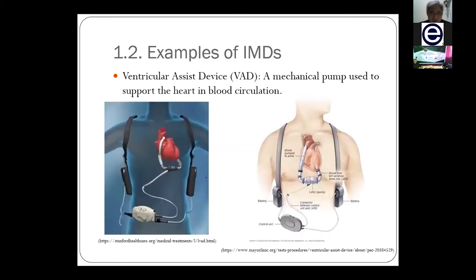The third IMD is the ventricular assist device. As the name indicates, it is implanted near the ventricle of the heart — the bottom part, which contains hollow chambers used to transfer blood throughout the body. When our heart becomes weak, especially as we age, doctors would advise installing a ventricular assist device to help palpitate the heartbeat so that blood can be transferred throughout our body.